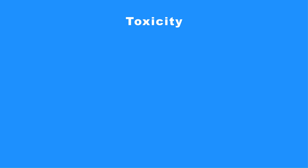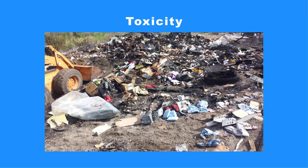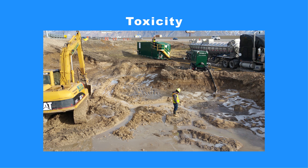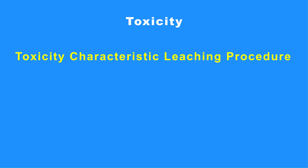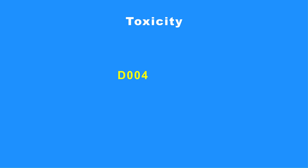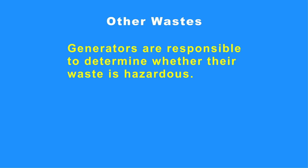Toxicity: Wastes that are hazardous due to the toxicity characteristic are harmful when ingested or absorbed. Toxic wastes present a concern as they may be able to leach from waste and pollute groundwater. The toxicity of waste is determined by the Toxicity Characteristic Leaching Procedure (TCLP). EPA has assigned waste codes D004 through D043 that correspond to each contaminant and its associated TCLP concentration.